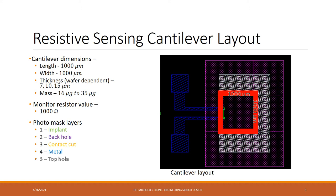On the right hand side of the screen you can see the GDS file that was used to create the different photo mask levels used to fabricate this device. The first level was used for implant to create the diffused resistor, the second was a back hole photo mask, the third was a contact cut which can't be seen because it's too small, the fourth was a metal layer, and the fifth was a top hole mask.